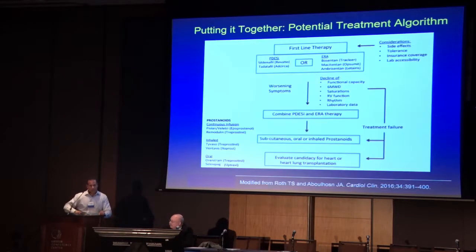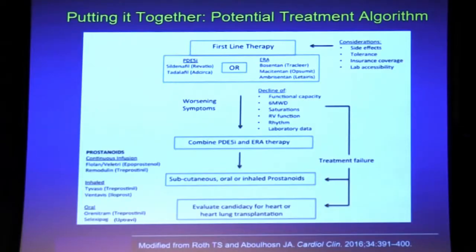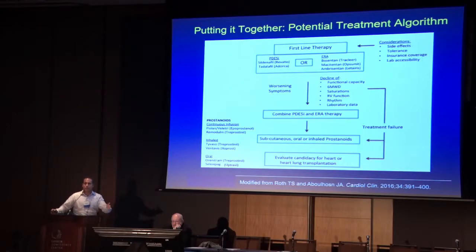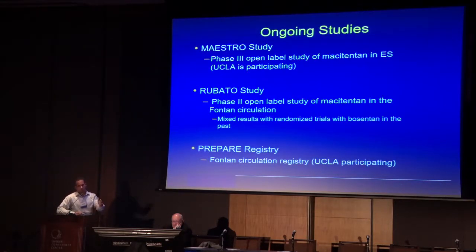Putting it all together, bosentan and sildenafil as a combination may not be the best pairing of endothelin antagonism and PDE5 inhibition, as it has had some problems in the idiopathic PAH world as well. Newer ERAs like macitentan and ambrisentan combined with tadalafil seem to be better. Several ongoing studies are looking at the Fontan circulation and use of macitentan in those groups, with UCLA participating.